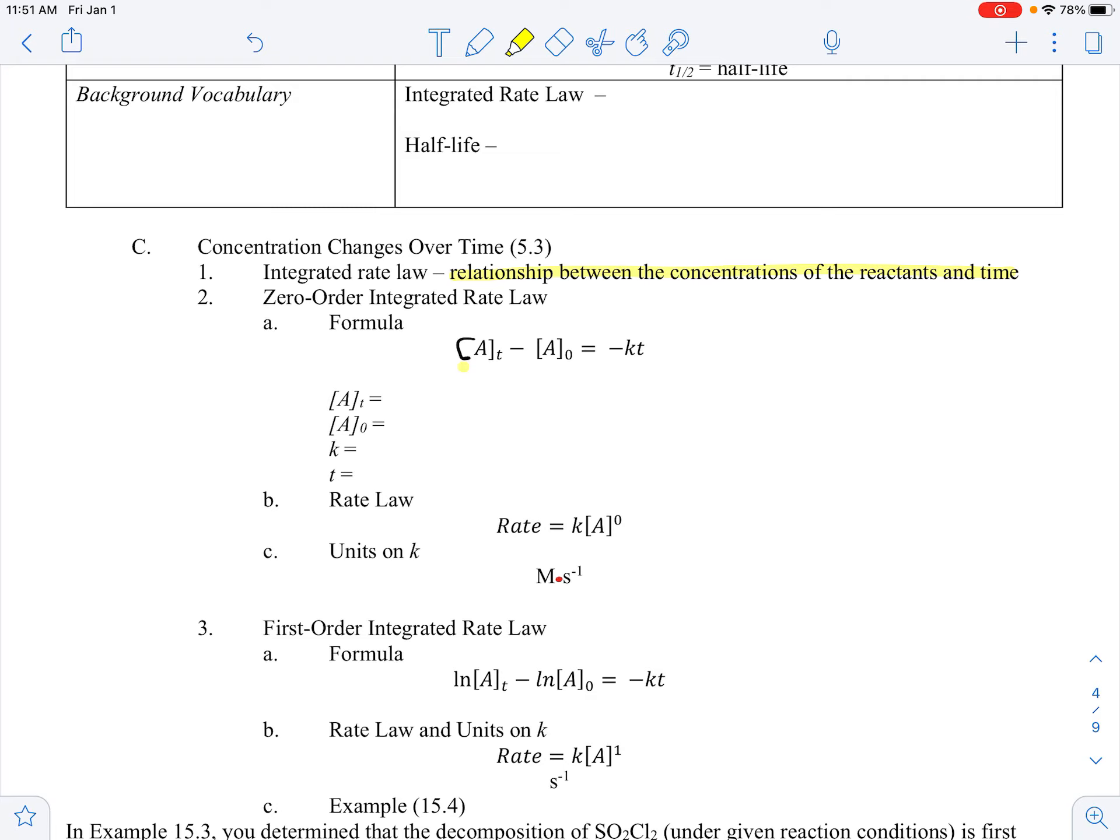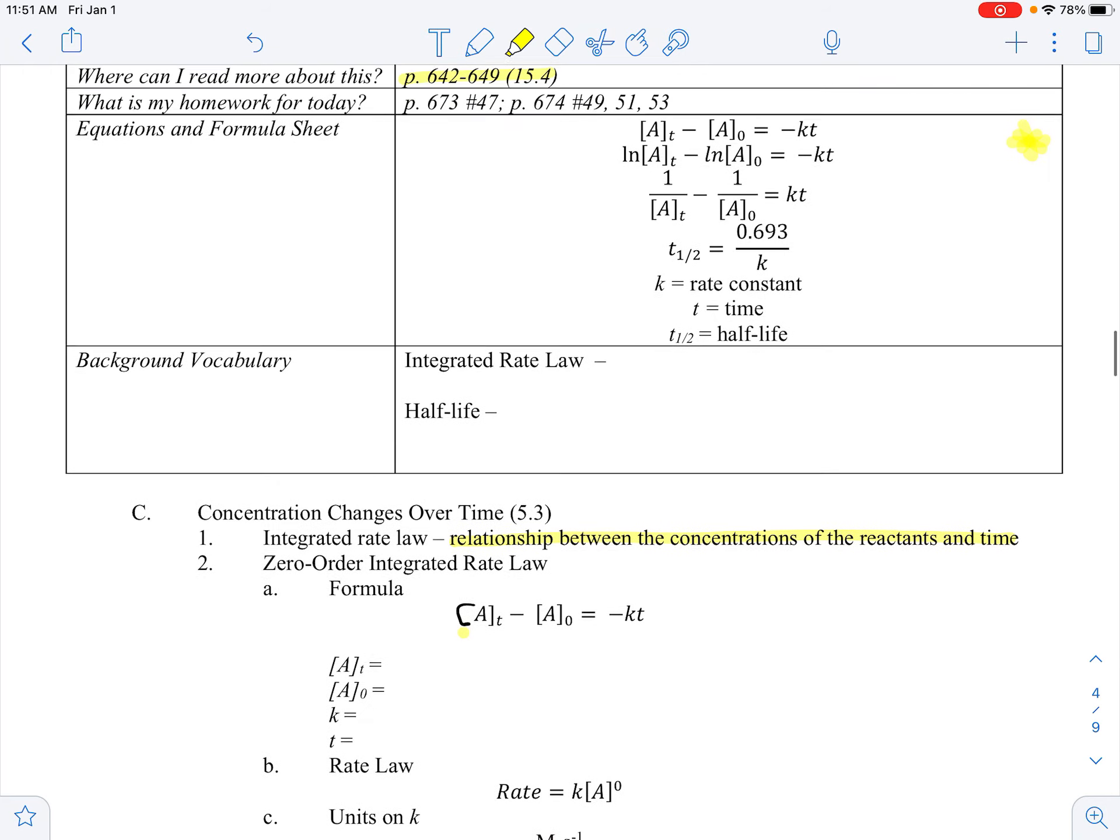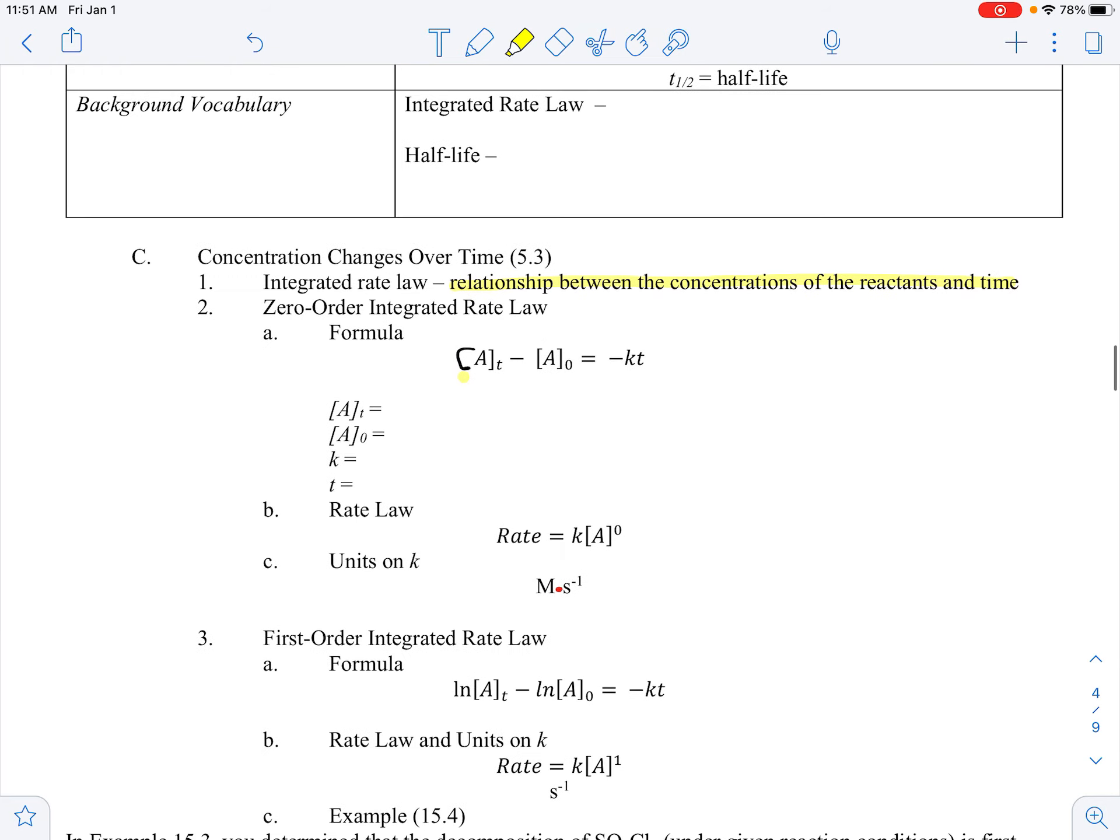So our zero-order, excuse me, I didn't mean to say first order. This is the order it is written on your equation sheet. But another way to look at this is, and we're just rearranging, [A]_t equals negative kt plus [A]_0. This also looks a little familiar, kind of like this here, right? So hopefully we can see that. But let's talk about what each of these mean before we get way into it.